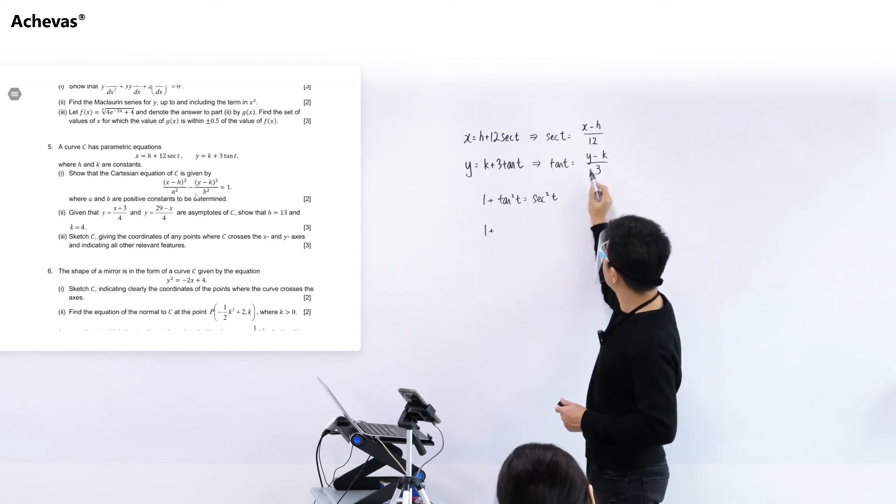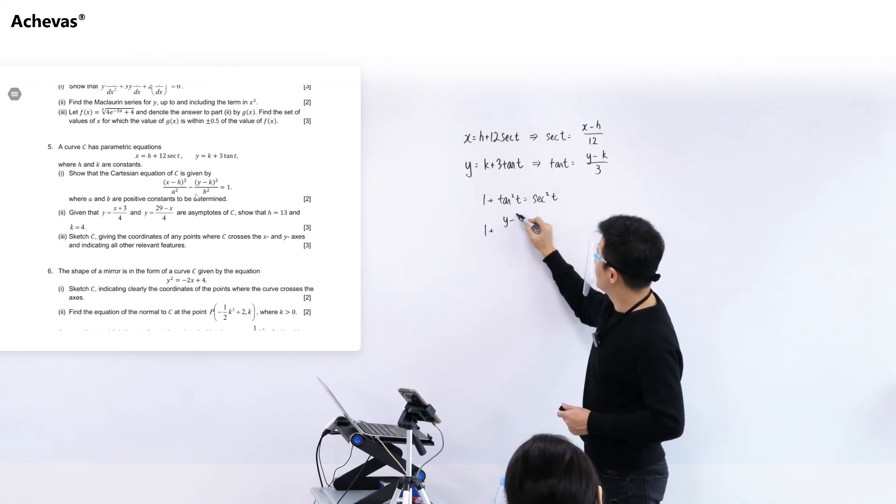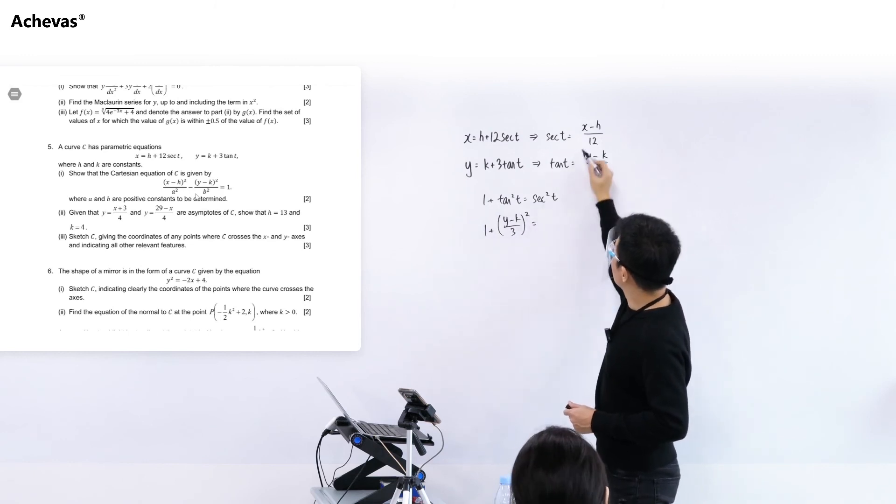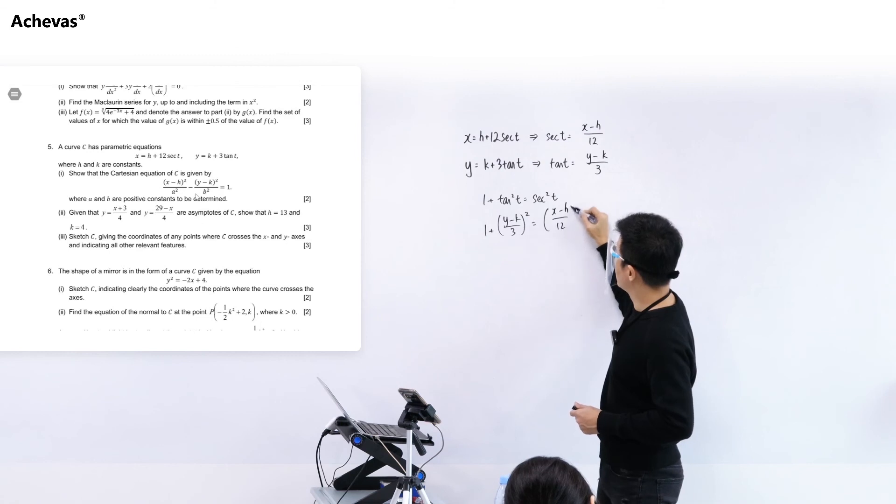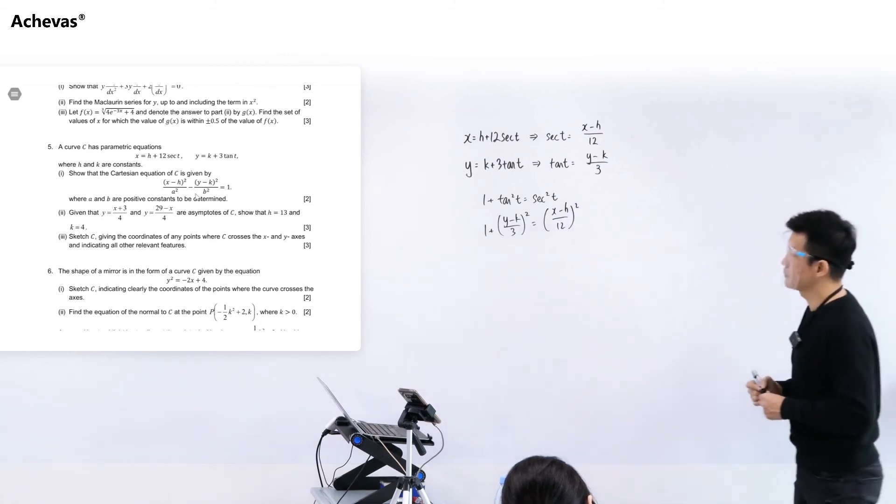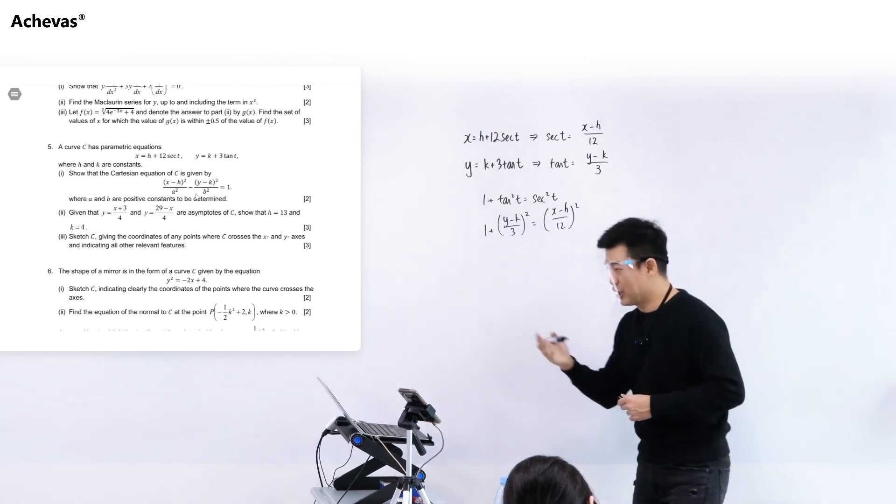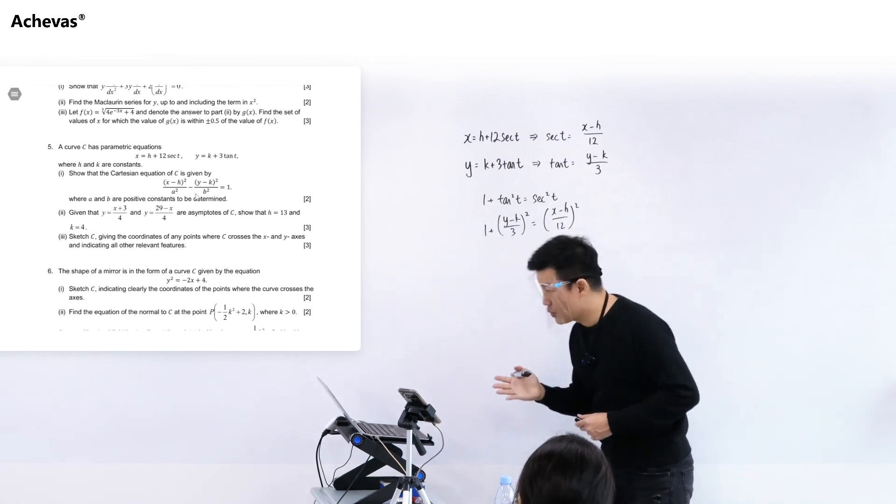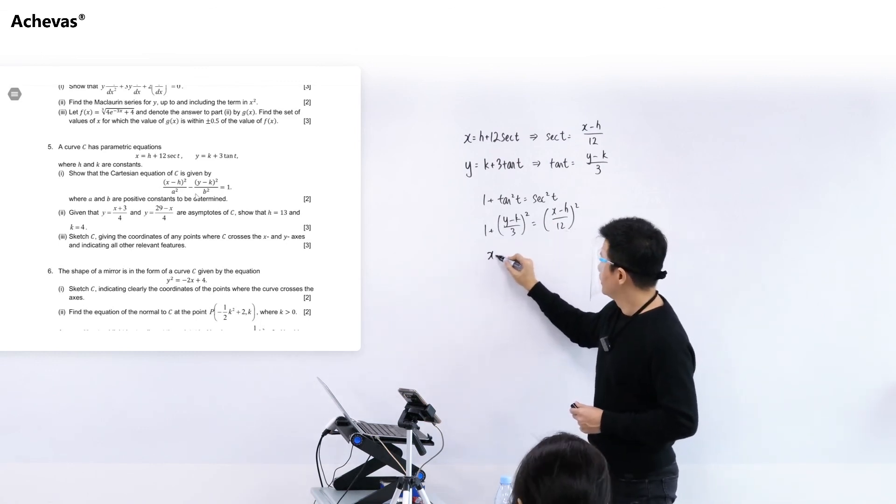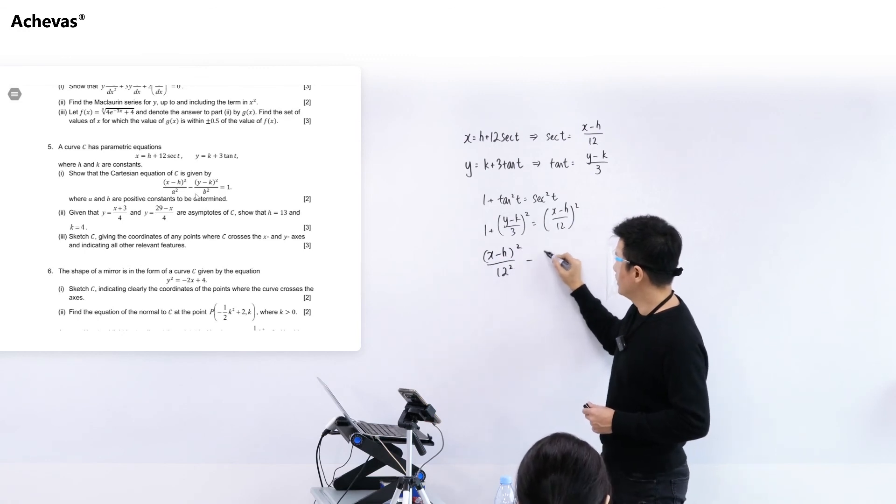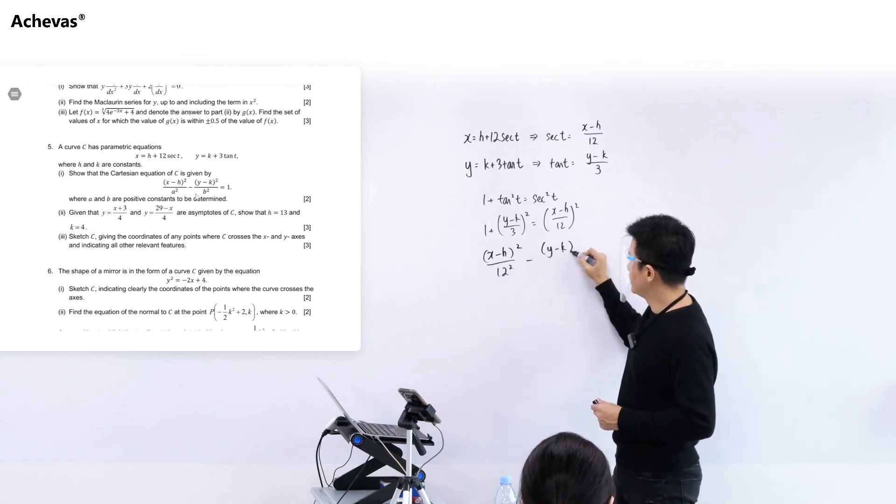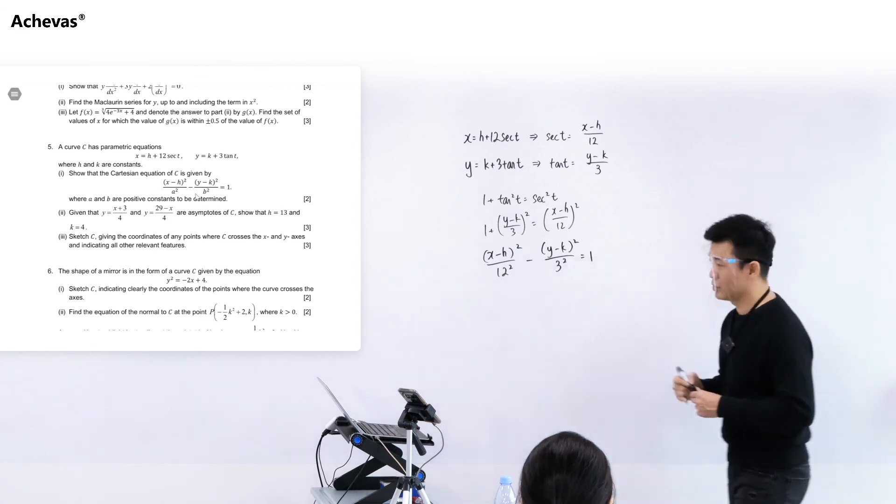And I'm going to use the trigonometric identity for 1 plus tangent square t is equal to secant square t. So, I have a 1 plus tangent square which is y minus k over 3 square is going to be equal to secant square this over 12 square. So, if I were to change this to what? According to what? The question want me to show then it will be this divided by 12 square minus away this divided by 3 square this is equal to 1.